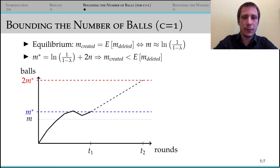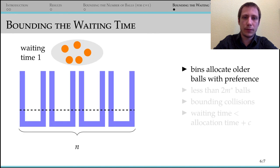For the waiting time, we again consider capacity 1 first. If bins prefer older balls, no younger ball gets in the way of older balls.